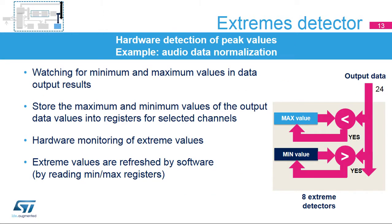The extremes detector monitors output results and stores the extreme values into minimum and maximum registers, as well as the associated channel number. Monitoring of data for extremes is only performed on selected channels to ensure that channels do not mix different input levels. Stored extreme values are refreshed each time the values are read in the register.